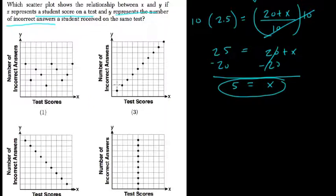So the incorrect answers here on test scores don't really make sense because this is saying the more incorrect answers, the higher your test score. That's not usually going to happen.